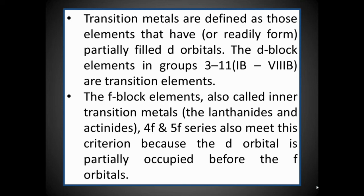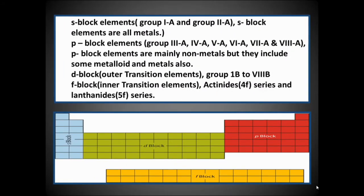The blocks of the periodic table: S-block elements are Groups 1A and 2A, along with helium. They are all metals except helium. P-block elements are Groups 3A to 8A, which are mainly non-metals but include some metalloids and metals as well. D-block elements are the outer transition elements from 1B to 8B.